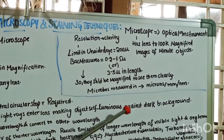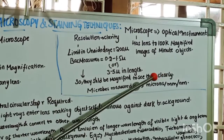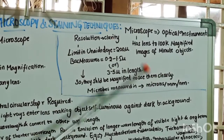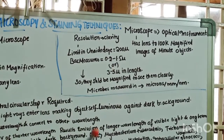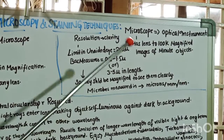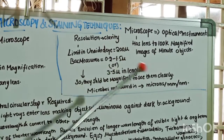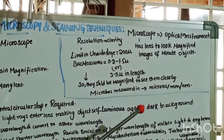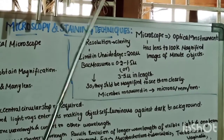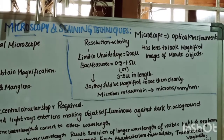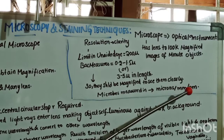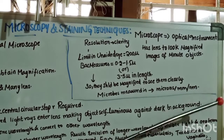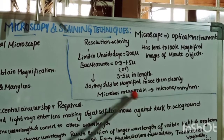These are very small structures which cannot be seen by an unaided eye, so they should be magnified to see them clearly using a microscope. A microscope is used to see small organisms like bacteria, viruses, and many other microorganisms. Microbes are measured in microns, millimeters, or nanometers.